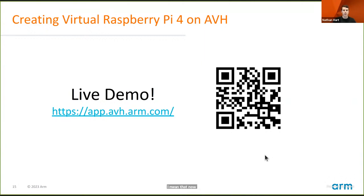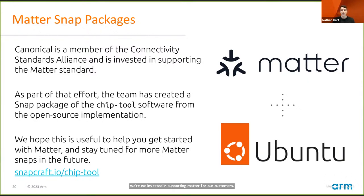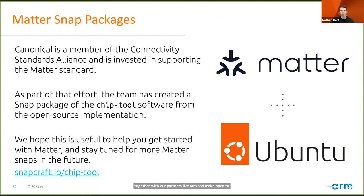We're going to select Ubuntu Server on Raspberry Pi, the 22.04 LTS. I'll name this 'Pi 4 Matter Controller' since this will be the controller device in our setup today. This is going to spin up the virtual hardware in the cloud and prepare the Ubuntu image, along with all the special sauce that ARM puts in there. While that's going, let me switch back to the slides to talk a bit about Matter on Ubuntu. Canonical is a member of the Connectivity Standards Alliance, which means we're part of the body that sets standards like Matter.